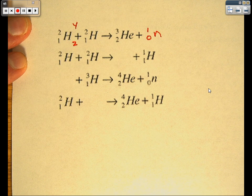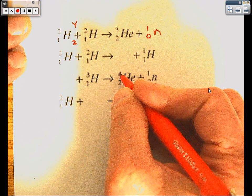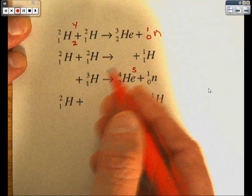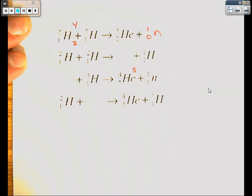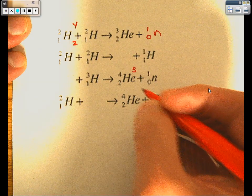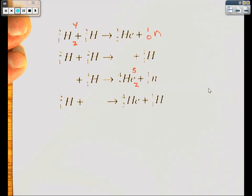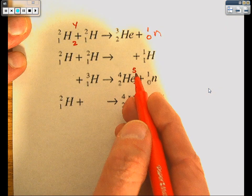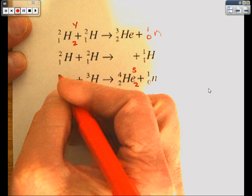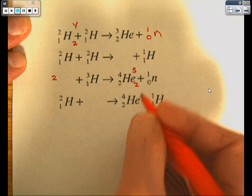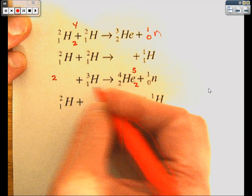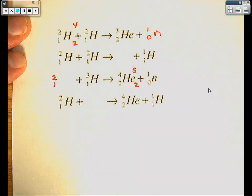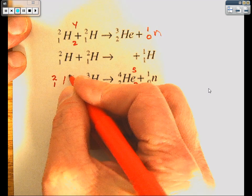And it would work the same way if we're going backwards. 4 plus 1 is 5. This is our completed side, so that's what we're going to work on. 4 plus 1 is 5. And then 2 plus 0 is 2. Again, subtract out what we have over here. 5 minus 3 is 2. 2 minus 1 is 1. Look it up by the bottom number. Atomic number 1 is hydrogen.